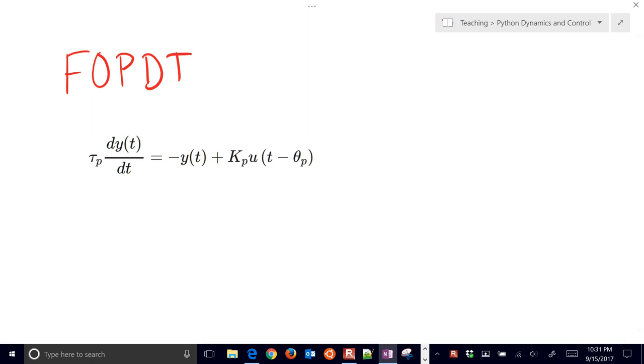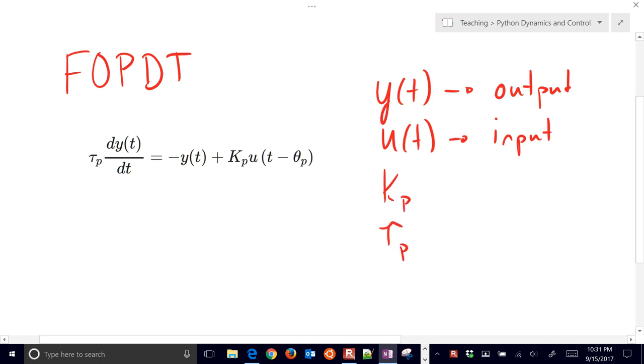This has two variables here. Y of T is going to be my output, and then U of T is my input, or the thing that I can change, or the controller can change. Then I have three parameters: Kp, TauP, and ThetaP, and those are going to adjust the shape of the response between the input and the output.